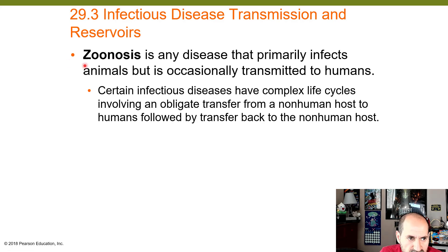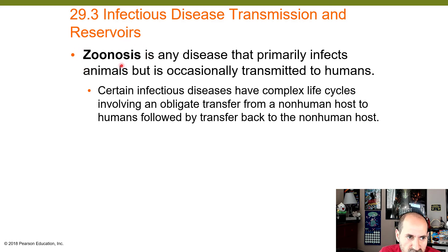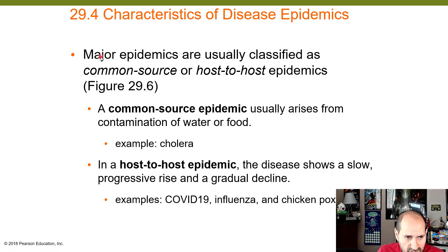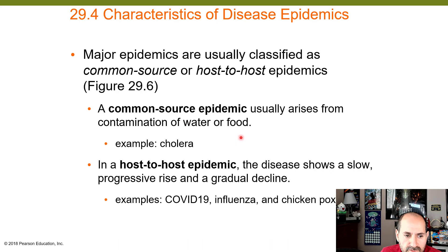Zoonoses are diseases that primarily infect animals but are occasionally transmitted to humans. Certain infectious diseases have complex life cycles involving an obligate transfer from a non-human host to humans and back. Major epidemics are usually classified as either common source or host-to-host. A common source epidemic usually arises from contamination of water or food — for example, cholera caused by Vibrio cholerae from contaminated water sources.